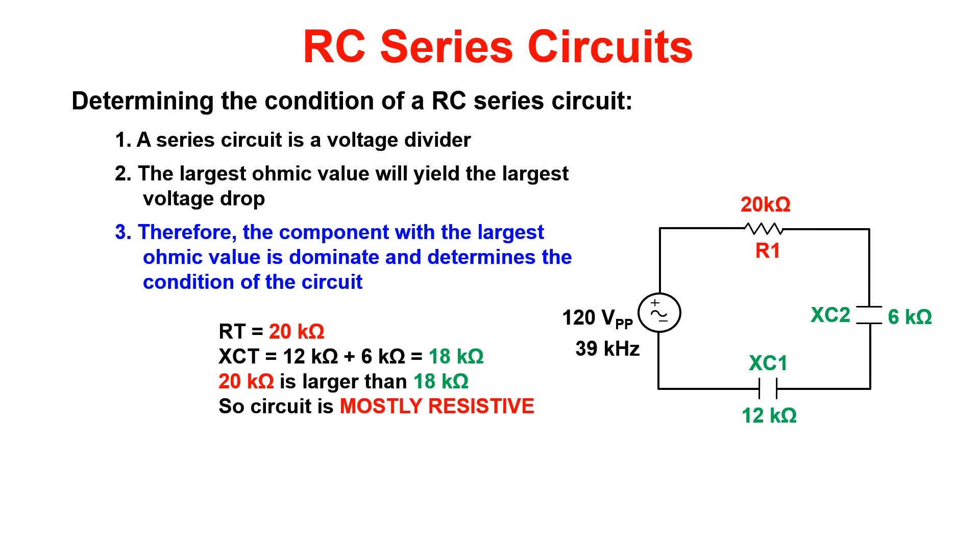As we know from previous lectures, a series circuit is a voltage divider and the largest ohmic value will yield the largest voltage drop. This means that the largest ohmic value will determine the condition of the circuit.